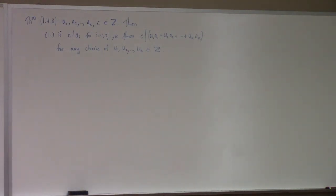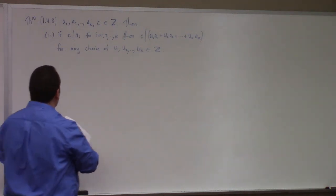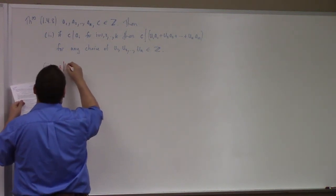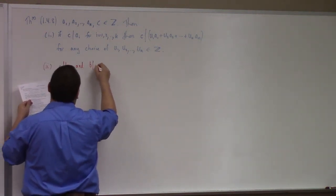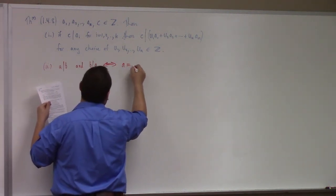What this says is: if a particular number c divides every aᵢ — a sub 1, a sub 2, etc. — then c divides any integer linear combination of these integers. Two: and it seems kind of odd, but here it is — a divides b and b divides a if and only if a is equal to plus or minus b.